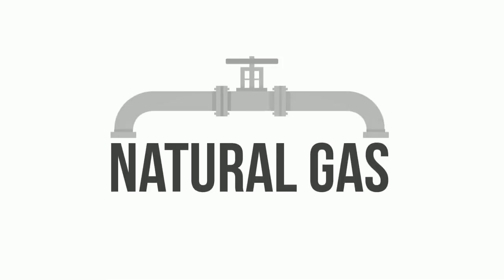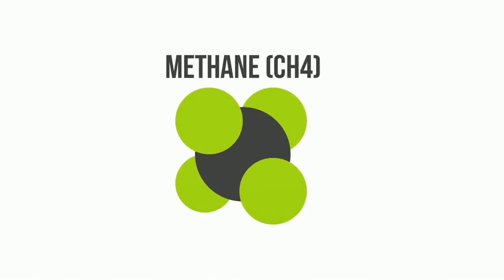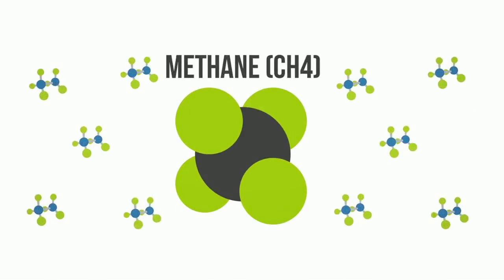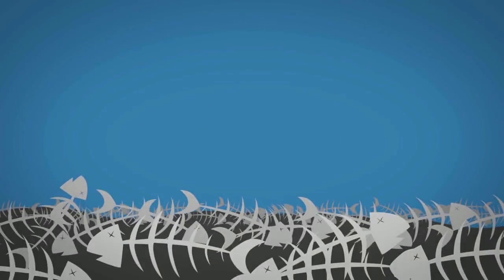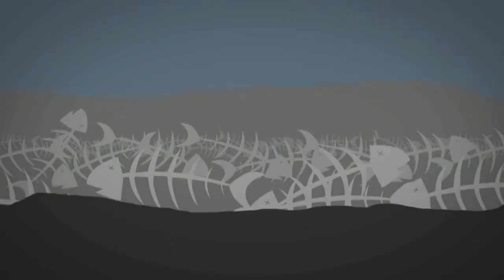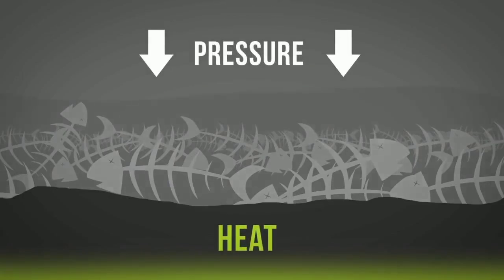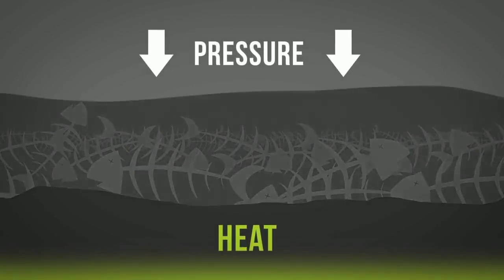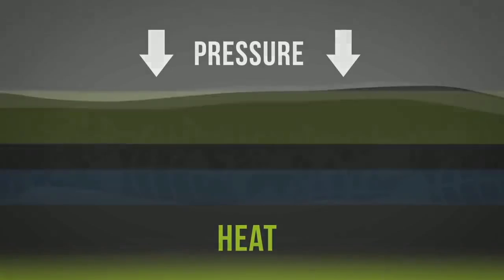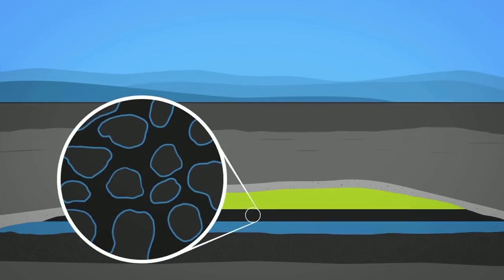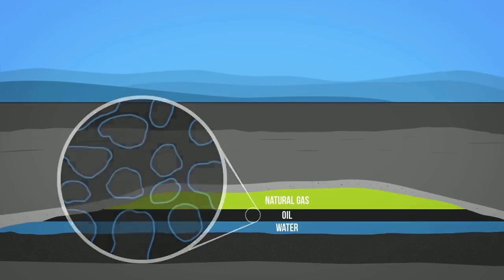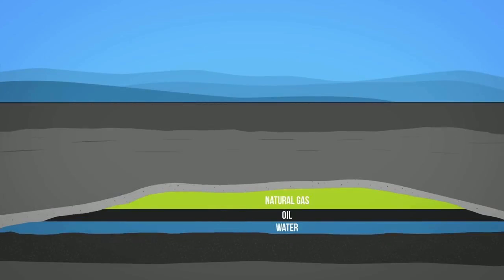Natural gas is primarily methane, or CH4, with smaller quantities of other hydrocarbons. It was formed millions of years ago when dead organisms sunk to the bottom of the ocean and were buried under deposits of sedimentary rock. Subject to intense heat and pressure, these organisms were converted to gas over millions of years. Natural gas is found in underground rocks called reservoirs, where tiny spaces called pores hold water, natural gas, and sometimes oil. The natural gas is trapped underground by impermeable rock, called a cap rock, until it is extracted.